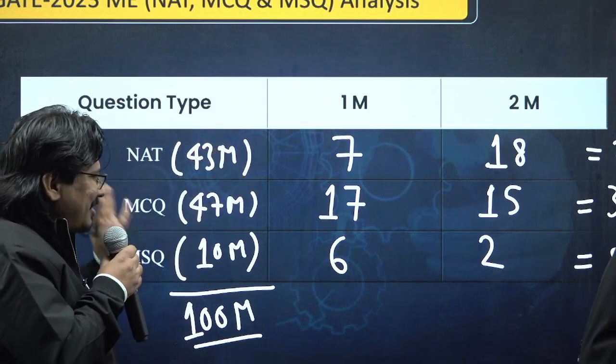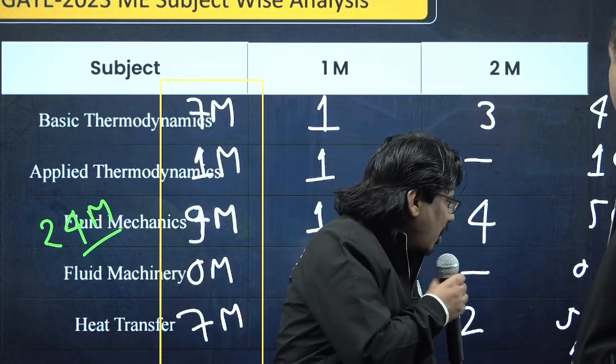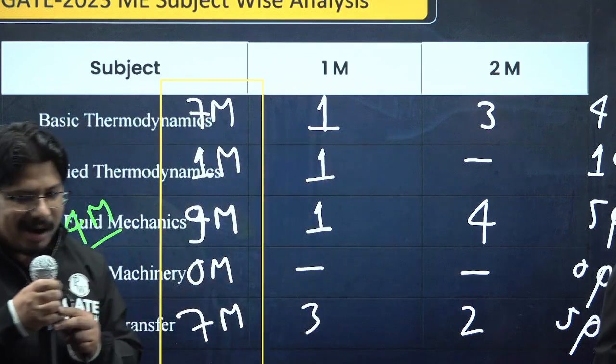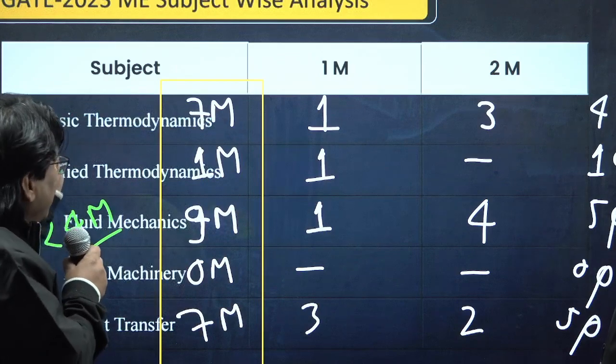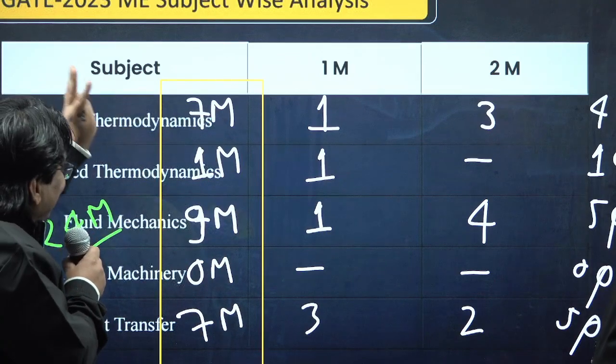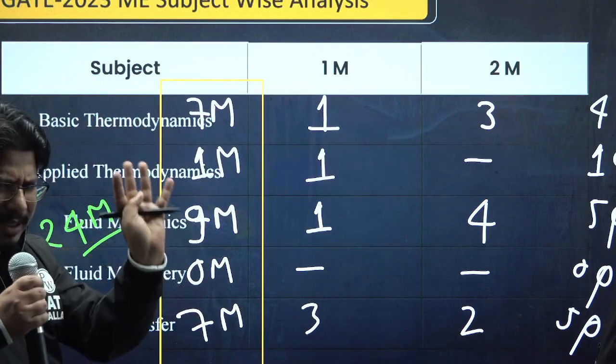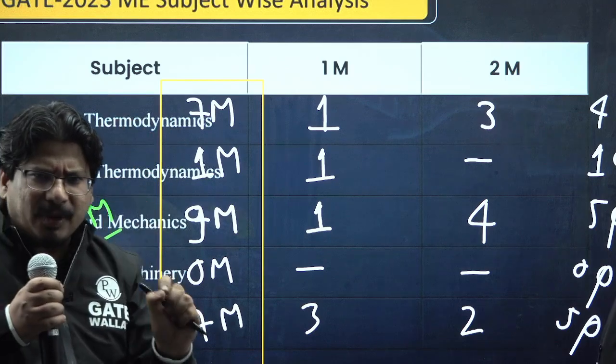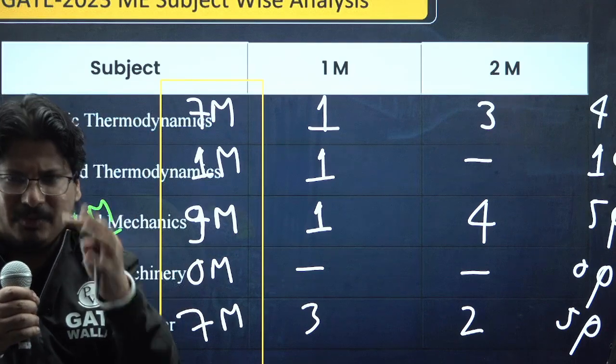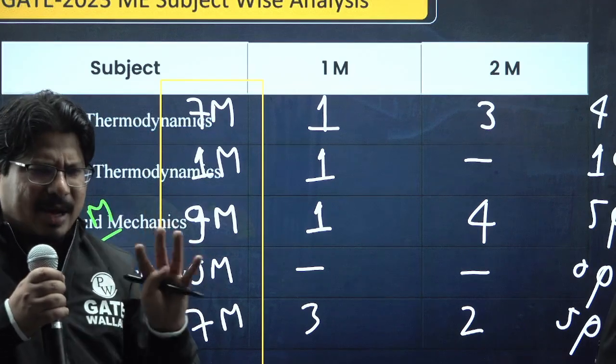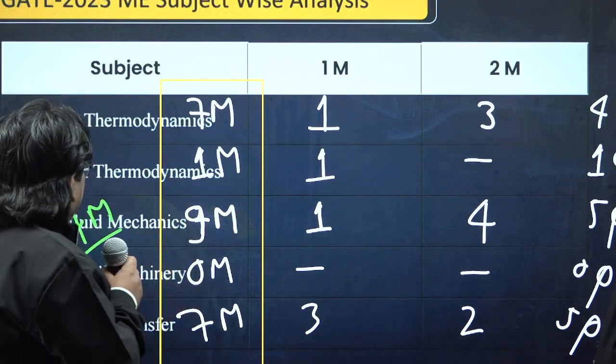Now let me talk about the weightage of thermal and fluid. Basic thermodynamics had 4 questions, 7 marks weightage, easy questions. There was only one question which was a little conceptual where you need to find the work done against atmosphere. Otherwise easy questions. Applied thermodynamics was very disappointing, only one question came for one mark.